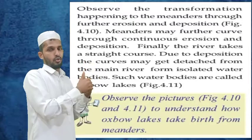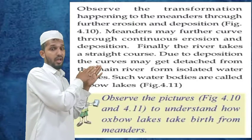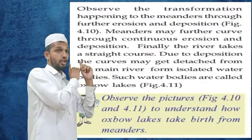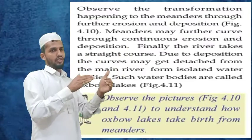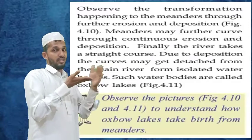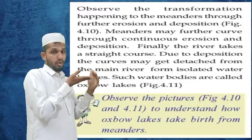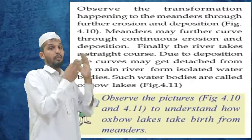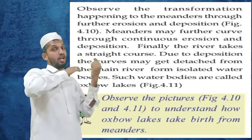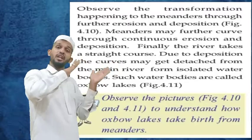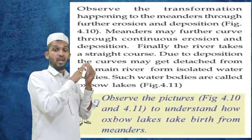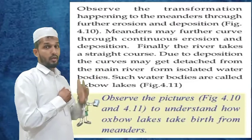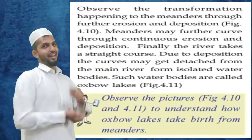Finally the river takes shortcuts. Parts of the river may get detached from the main river, forming isolated water bodies. Such water bodies are called oxbow lakes.